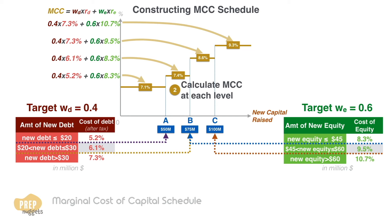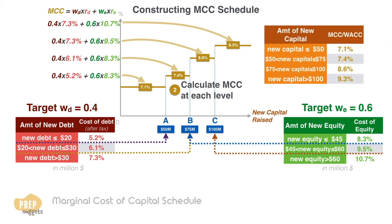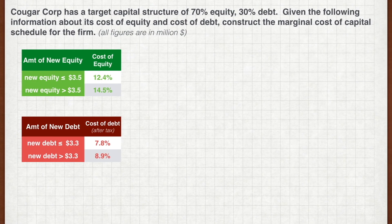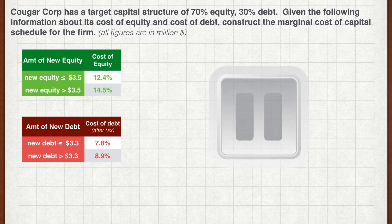So what we have here is the marginal cost of capital schedule for this firm. Now it's your turn to practice. Cougar Corp has a target capital structure of 70% equity and 30% debt. Given the following information about its cost of equity and cost of debt, reconstruct the marginal cost of capital schedule for the firm. Pause the video now and work out your answer.